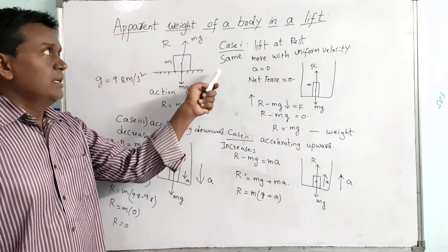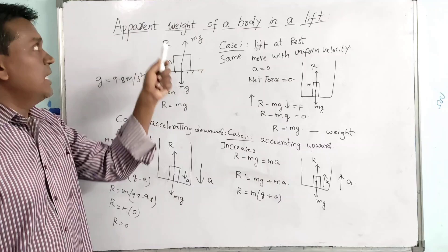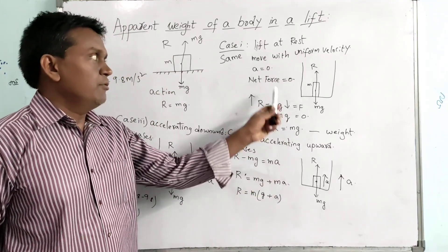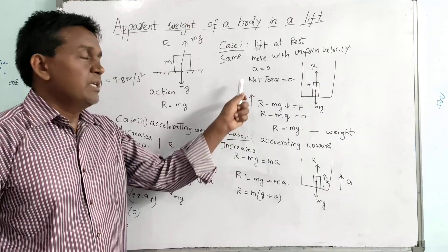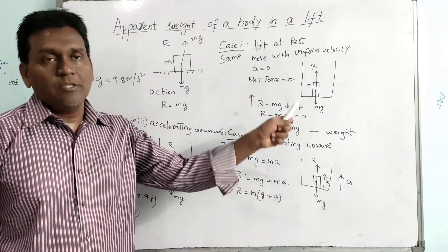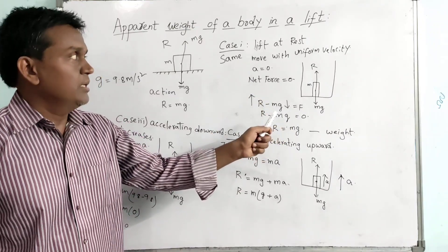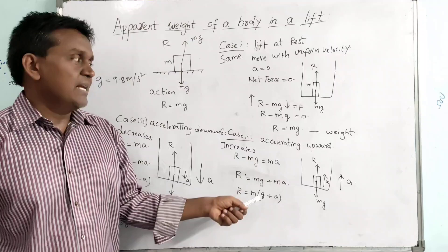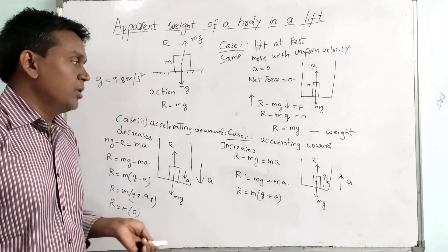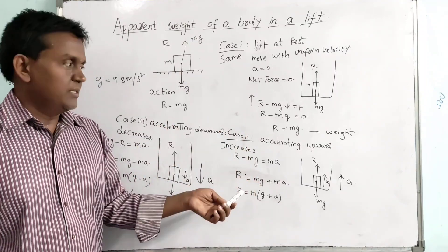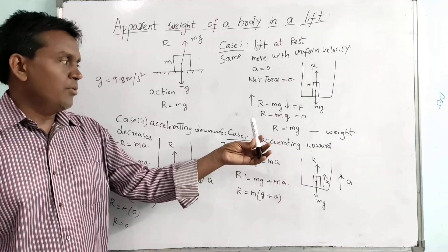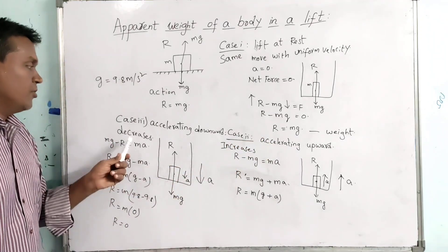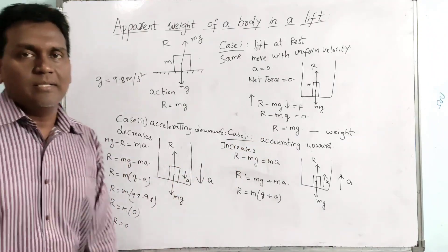These are the three cases for apparent weight of a body in a lift. When the lift is at rest or moving with uniform velocity, we experience our actual weight. When the lift is accelerating upward, our apparent weight increases. When the lift is accelerating downward, our apparent weight decreases.